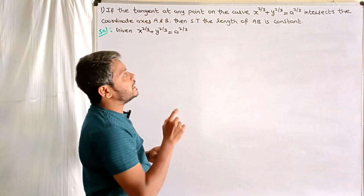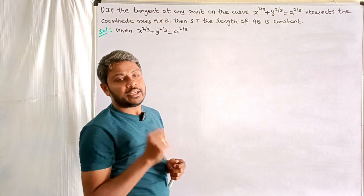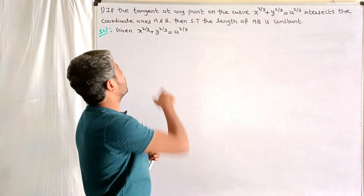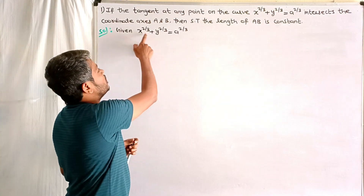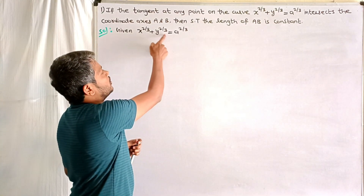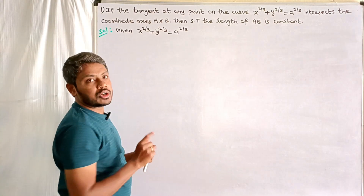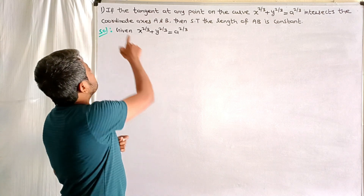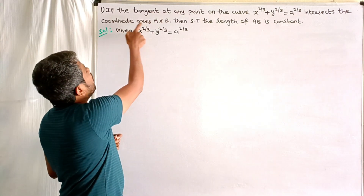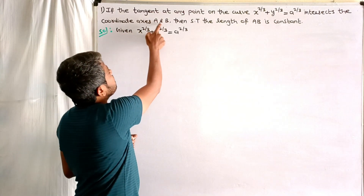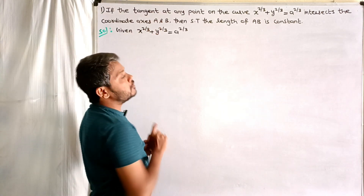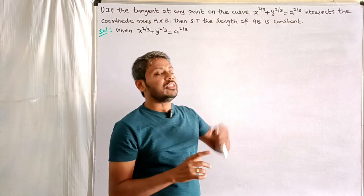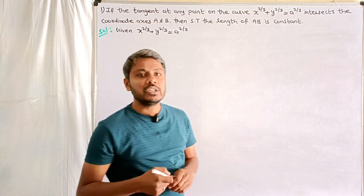If the tangent at any point on the curve x^(2/3) + y^(2/3) = a^(2/3) intersects the coordinate axes at A and B, then show that the length of AB is constant.